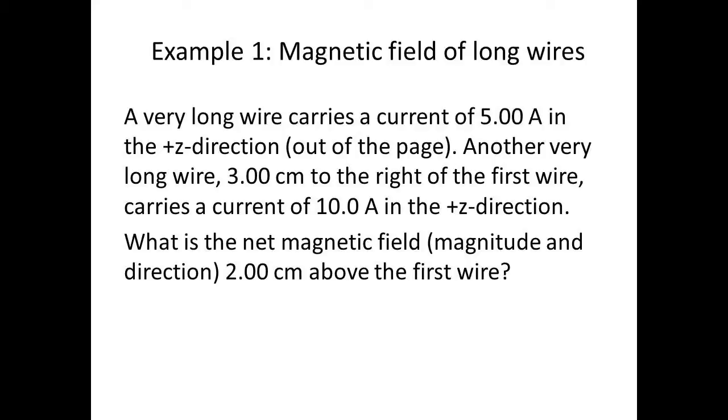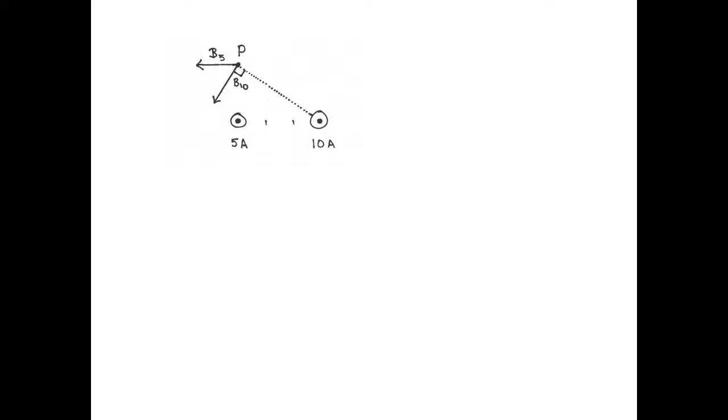Another very long wire, 3 cm to the right of the first wire, carries a current of 10 Amperes in the plus Z direction. What is the net magnetic field, magnitude and direction, 2 cm above the first wire?